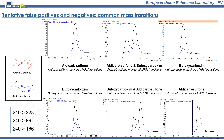And finally, a classic example of compounds with mass transitions in common are aldicarb sulfone and butoxycarboxime. Although ion ratios are not exactly identical, they can be close enough for false positives and false negatives. So, special care should be taken with this pair of compounds, which, as in another previously seen case, are constitutional isomers too.